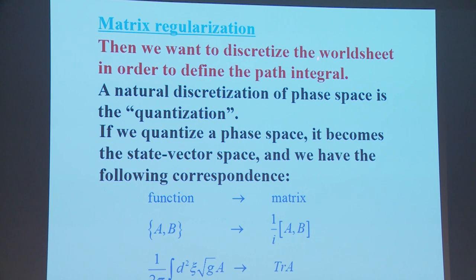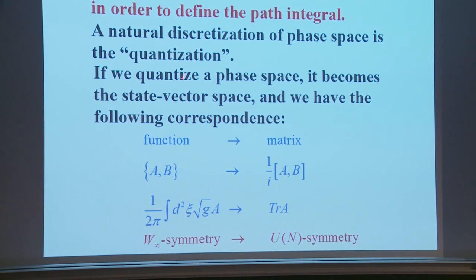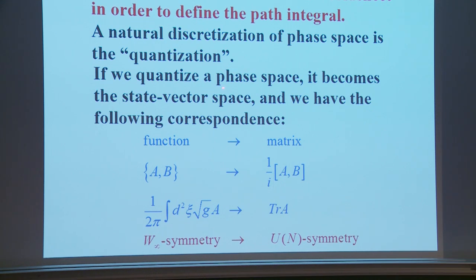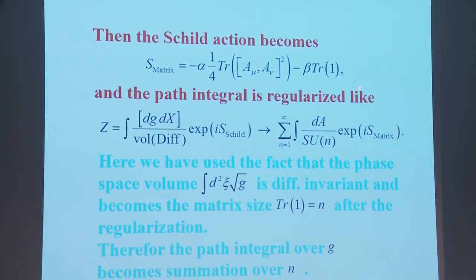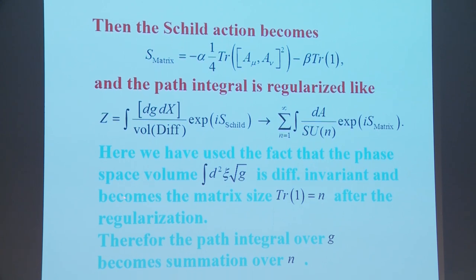We want to discretize the worldsheet to define the path integral. The natural discretization of phase space is quantization: if we quantize the phase space, it becomes a state vector space, with the correspondence — functions become matrices, Poisson brackets become commutators, integration over space becomes trace, and W-infinity symmetry becomes U(N) symmetry. Then the Schild action becomes a matrix expression and the path integral is regularized accordingly.